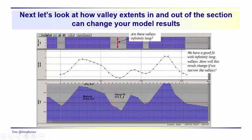We've made an assumption here that these valleys are infinitely long — extending to plus and minus infinity in and out of the section, or at least significant distances. This is a plan view in kilometers. Realistically, those valleys don't extend to infinity, so in the next video we'll take a look at how to manage this and see what the edge effects are as we bring those valley edges in closer. We'll see what happens to the anomaly and what inversion process we need to bring the calculations back into agreement with the observations.